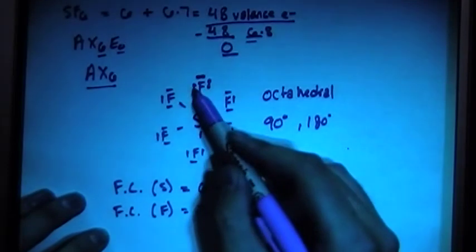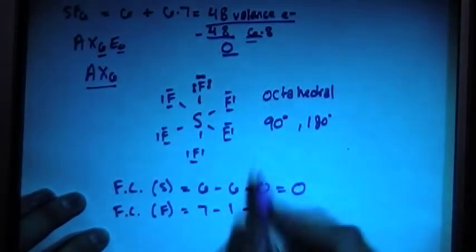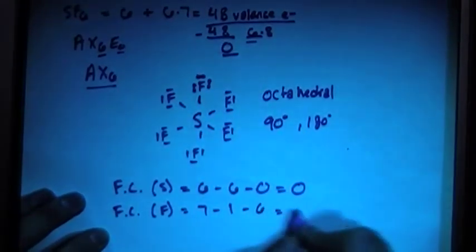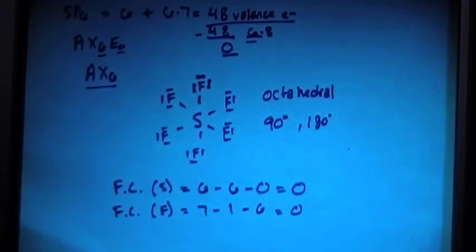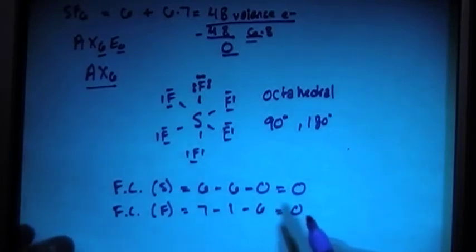And then minus the 6 unpaired electrons: 1, 2, 3, 4, 5, 6 unpaired electrons. And that also gives you a 0 formal charge, which is what you're looking for in chemical molecules, chemical compounds.